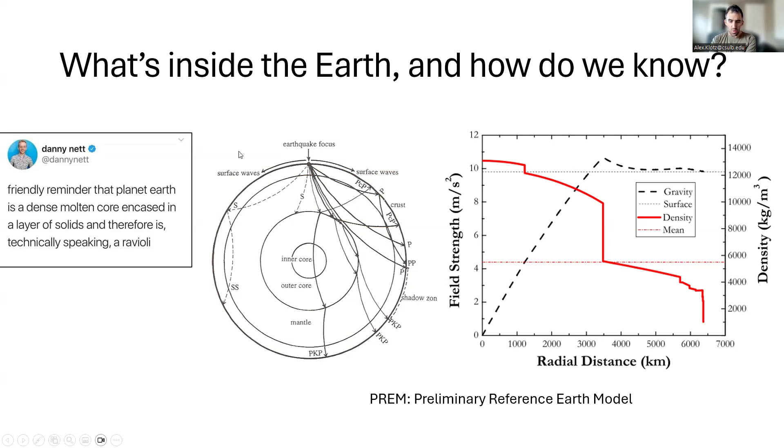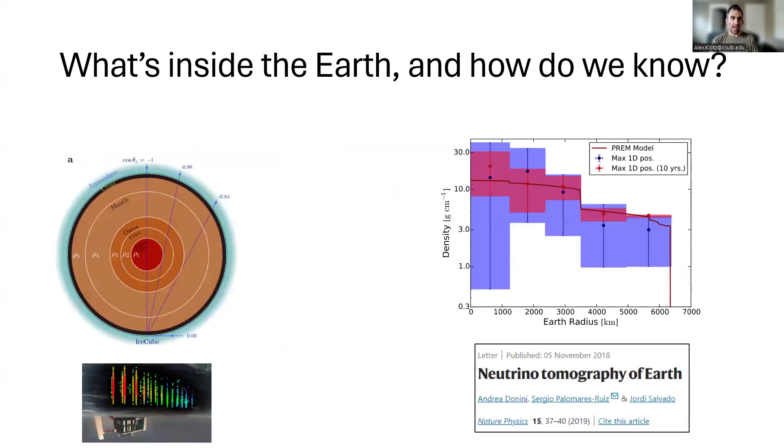So this is based on earthquake data. You can also use satellites to measure the gravitational field at different latitudes, which tells us similar information. And most recently, there is a neutrino detector on the south pole called IceCube. And by measuring neutrinos passing through the earth at different angles, it can reconstruct essentially an x-ray of earth's interior, finding data consistent with the PREM model, just with bigger error bars.